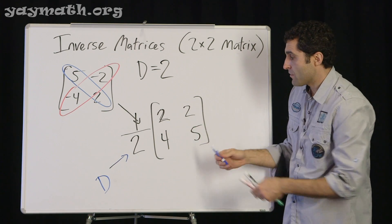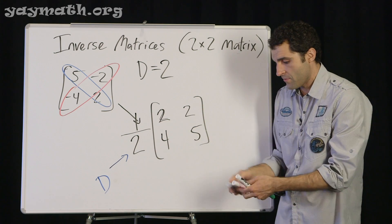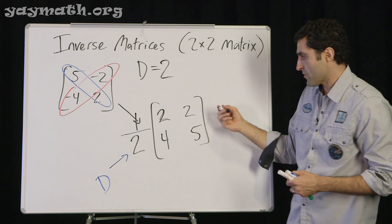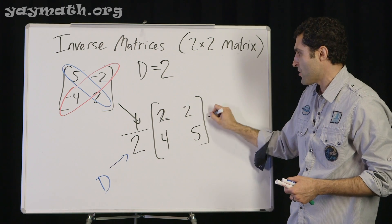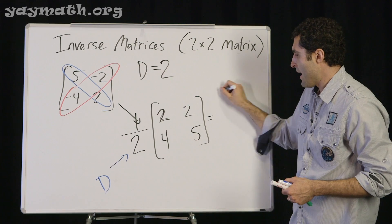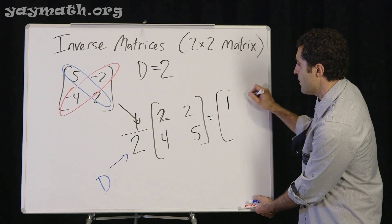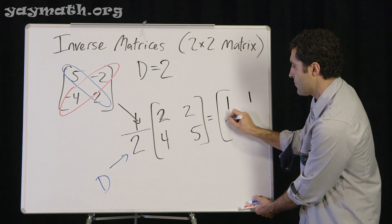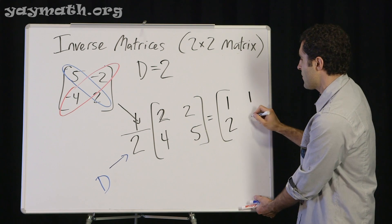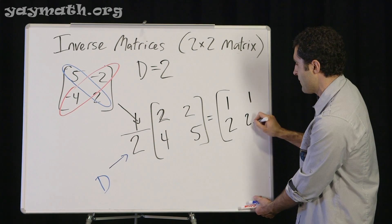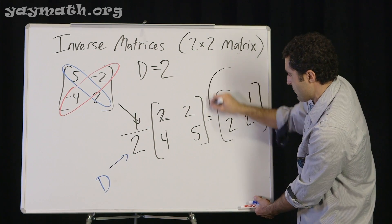Every single time: 1 over the determinant, times the flipped and sign-changed matrix. And don't forget we have to distribute this through. The 1/2 applies to all entries, so 1/2 times 2 is 1, 1/2 times 4 is 2, and 1/2 times 5 is 2.5. This is the inverse.